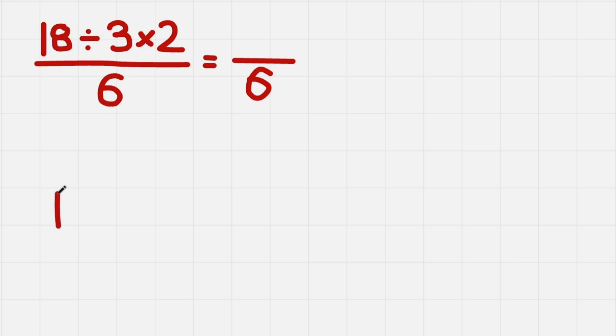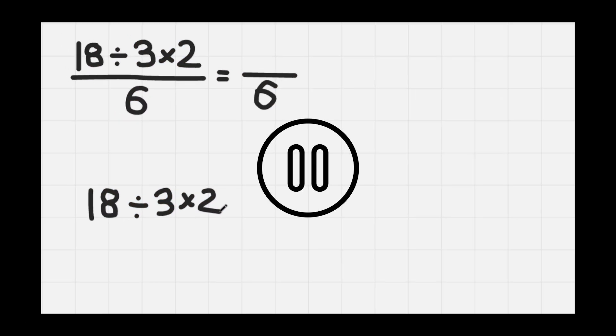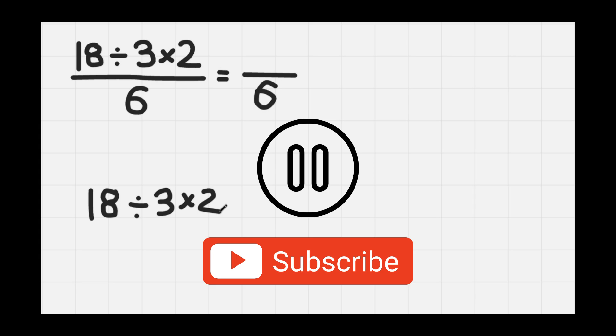So let's rewrite it down here. We get 18 divided by 3 and times 2. If you like the explanation so far please consider subscribing. Thank you!